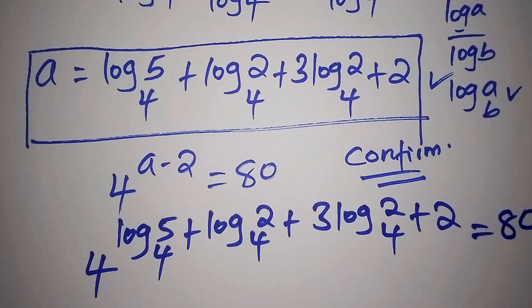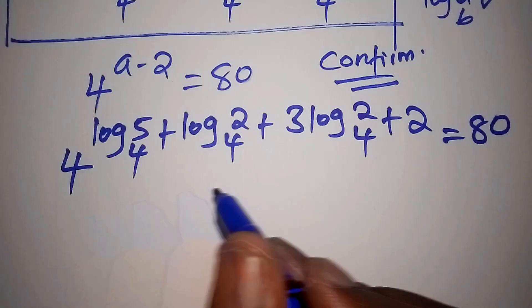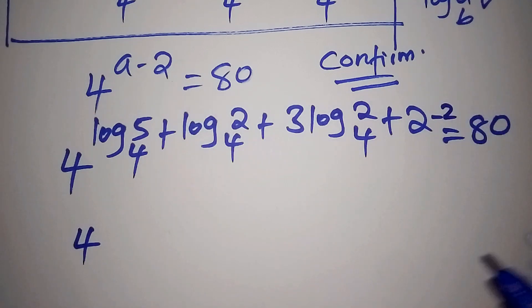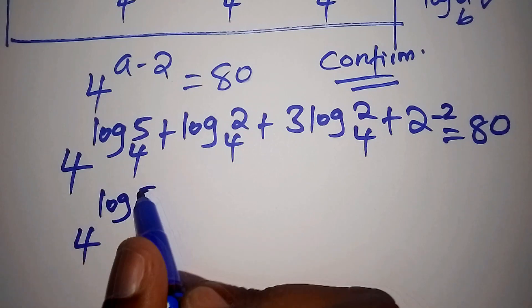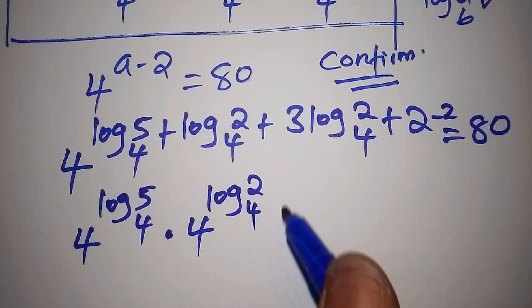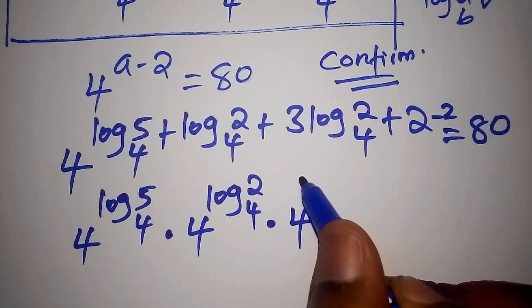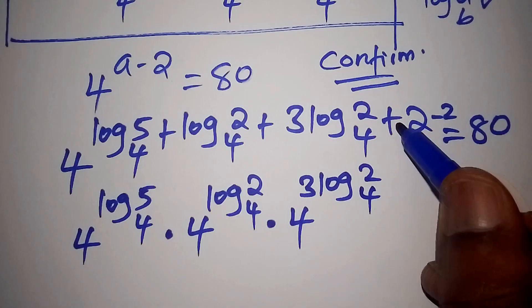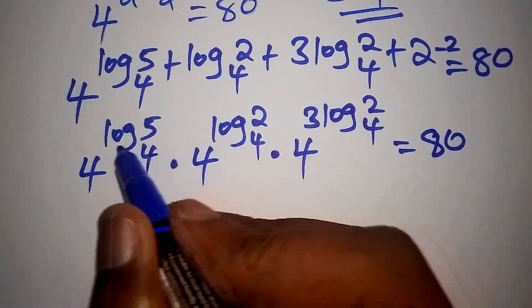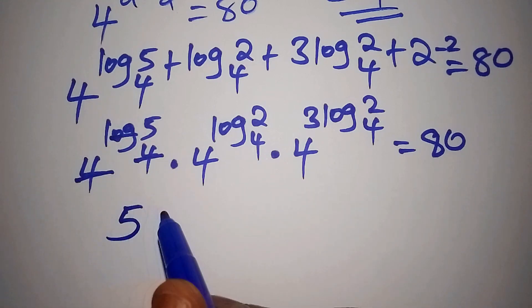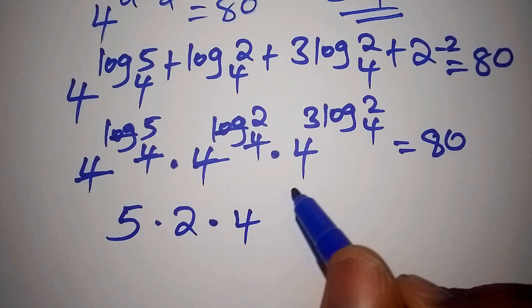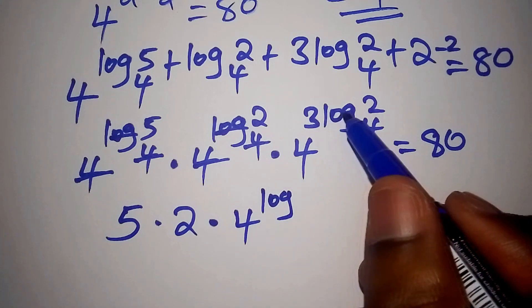This gives us 80. We write it as 4 to that exponent plus 2 minus 2. The plus 2 and minus 2 cancel. So we have 4 to the log of 5 to the base of 4, multiplied by 4 to the log of 2 to the base of 4, multiplied by 4 to the 3 times log of 2 to the base of 4. The log base 4 cancels with the 4, giving us 5, then 2.